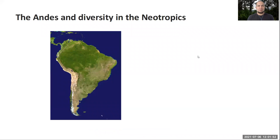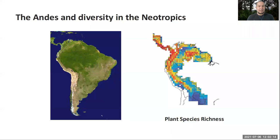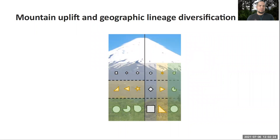Today I'll be talking about some preliminary results for a project trying to understand how the uplift of mountains shaped biodiversity. Particularly in the neotropics, the uplift of the Andes has had an enormous consequence for how climate is distributed, how environmental conditions are distributed across the continent, and also for how biodiversity is distributed. The Andes typically hosts some of the highest biodiversity regions on the whole planet for plants and animals.